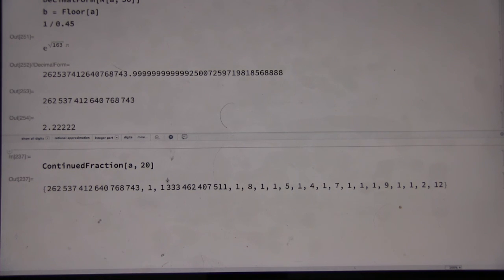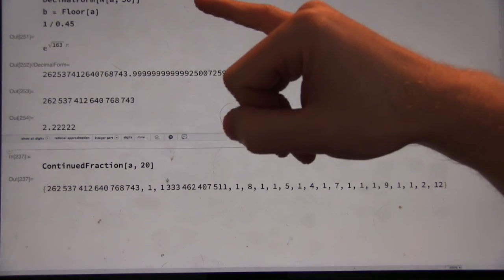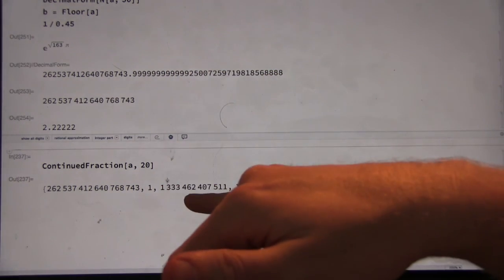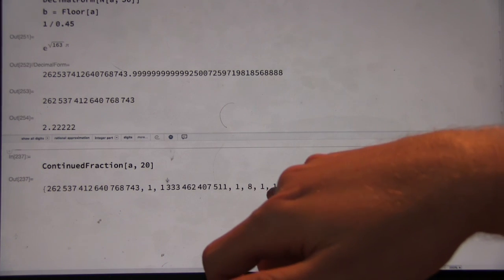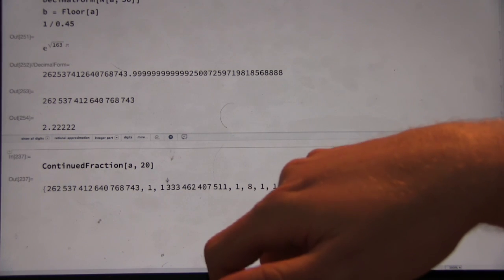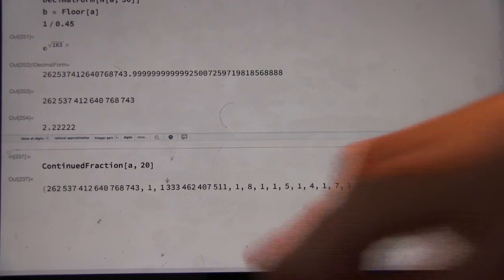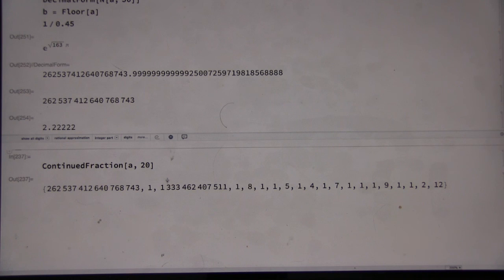So, what I would like you today to do, independently of each other, so one person can go first, one person can go second, is to find another number involving pi that's really close to an integer, or maybe has a really large continued fraction component, maybe somewhere down the line. So maybe it's really close to not an integer, but a rational number. Okay? So just play around and see what you can find. Alright.